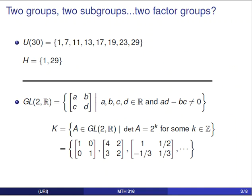The two groups we're going to take a look at are these. The first is U of 30, which is the group of units modulo 30. These are the numbers from 1 to 29 that are relatively prime to 30. The subgroup we'll be dealing with from this group is H, which contains just the numbers 1 and 29.